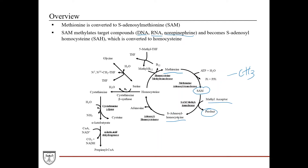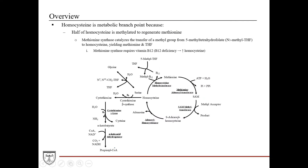S-adenosylhomocysteine is converted to homocysteine, and that yields an adenosine. Homocysteine is at a branch point in metabolism — it can go towards one direction where you regenerate methionine, or it can go in a second direction where it generates propionyl-CoA. The first direction involves an enzyme called methionine synthase.